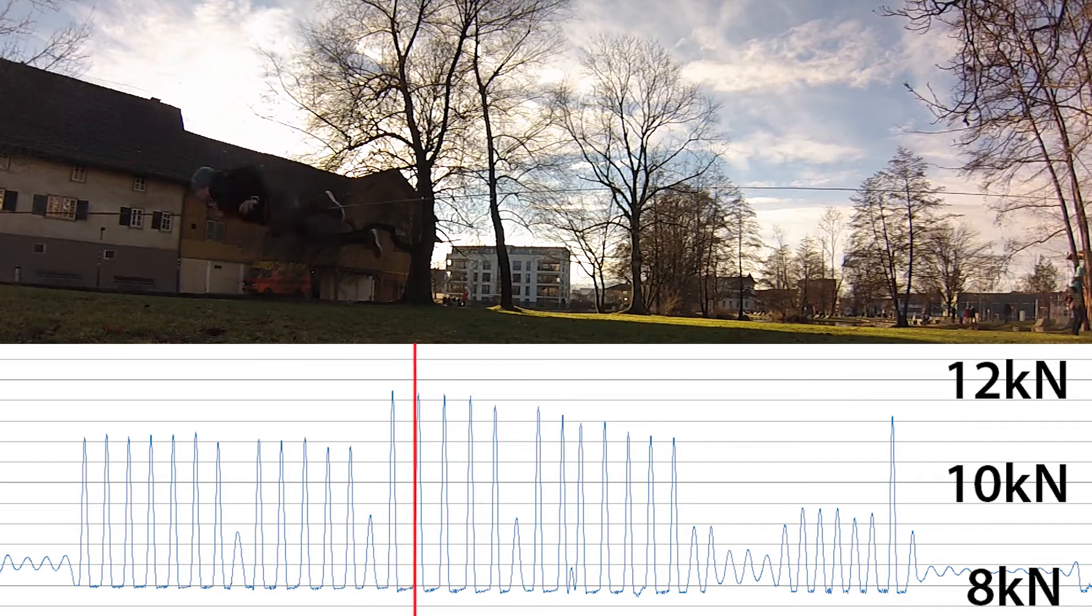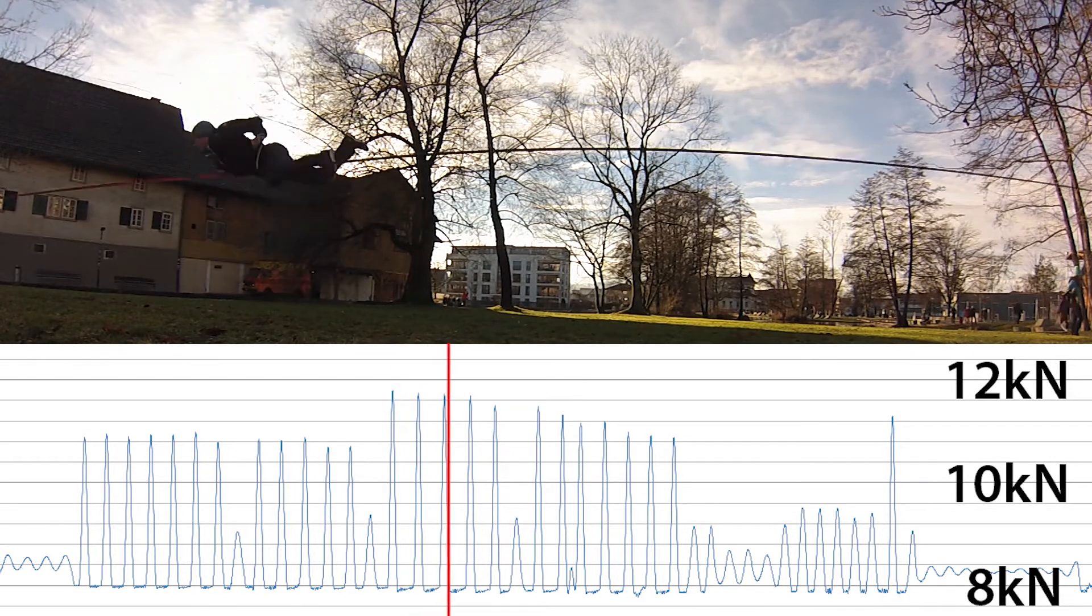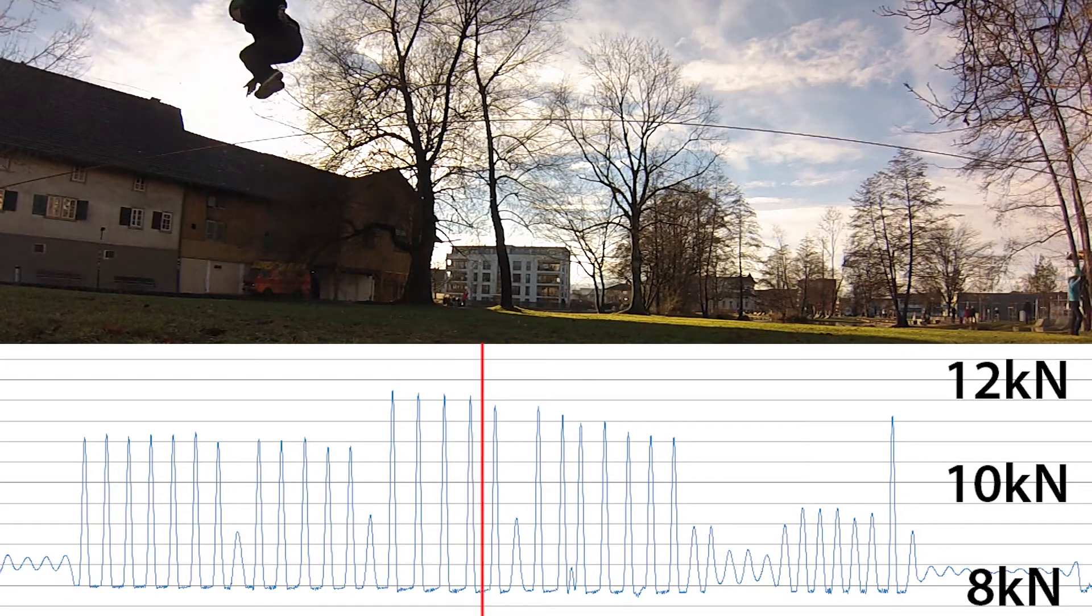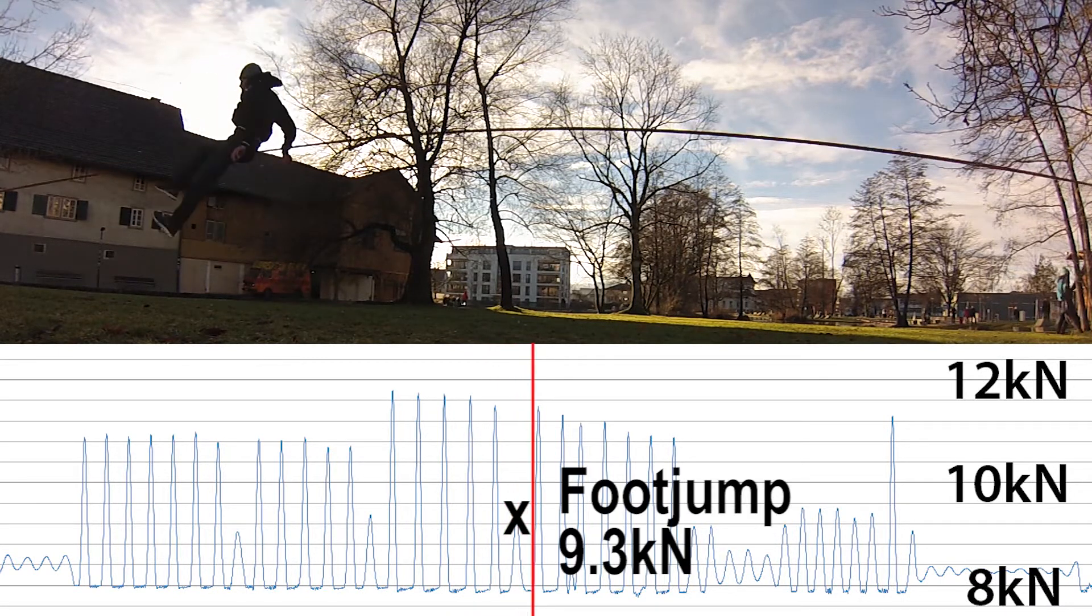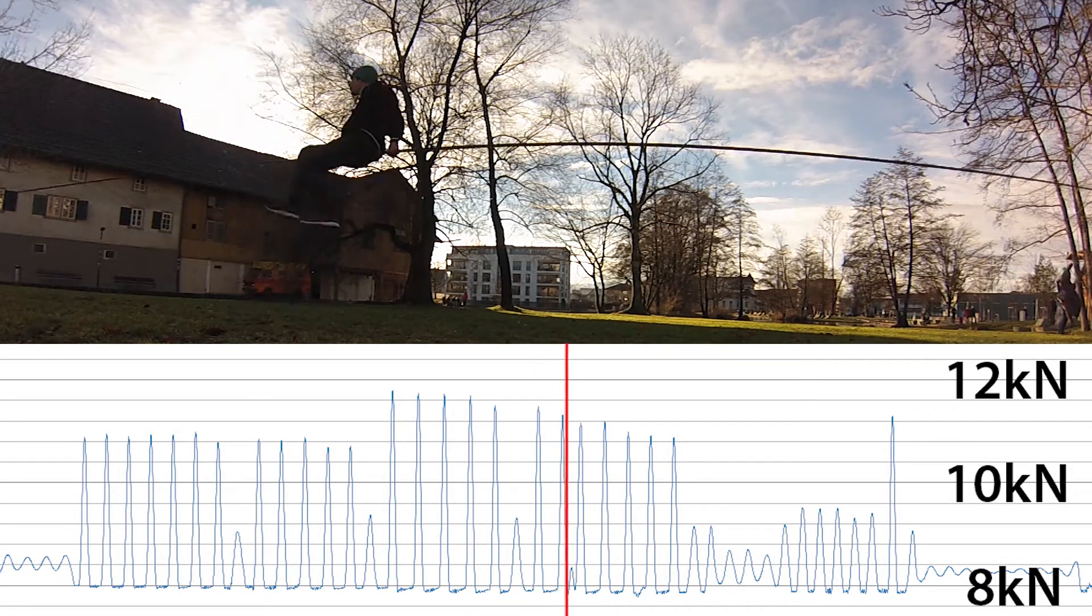This is an important fact as, for example, aluminium is prone to this kind of cyclic load. So never use aluminium carabiners in the slackline, even less if you intend to jump line.